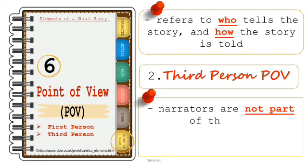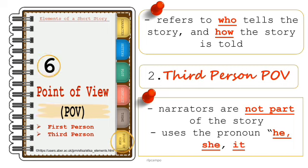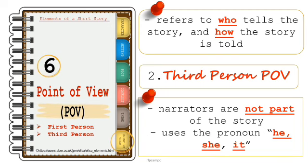The narrator can also tell the story from the third-person point of view, meaning they can tell us what the characters think and do, but they are not part of the story. Third-person narrators use the pronouns he, she, or it.